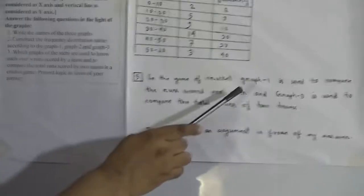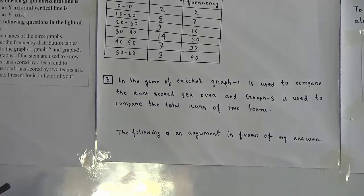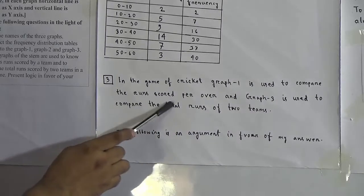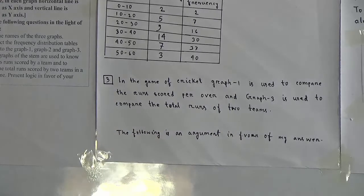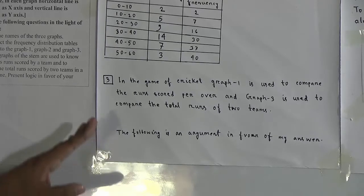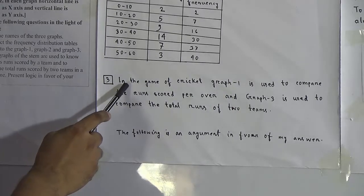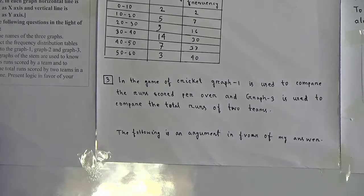Now we will write the solution of question three. In the game of cricket, graph 1 is used to compare the runs scored by a team over each over. And graph 3 is used to compare the total runs of the two teams. I will now represent the logic in favor of my answer. In the first case, graph 1 is used because it is a histogram.